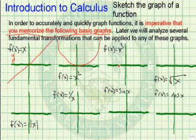F of x equals x cubed is called the cubic equation. Turns out it's an odd function. Coincidentally, the exponent is an odd number.